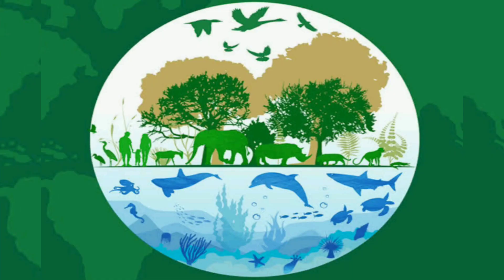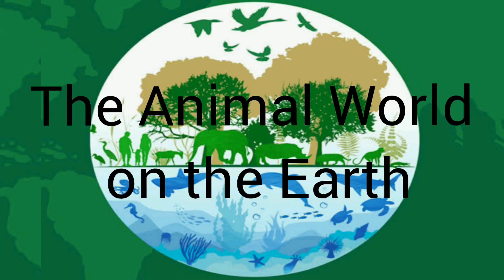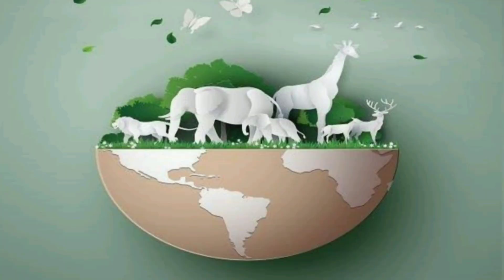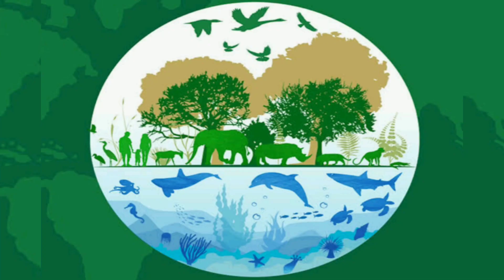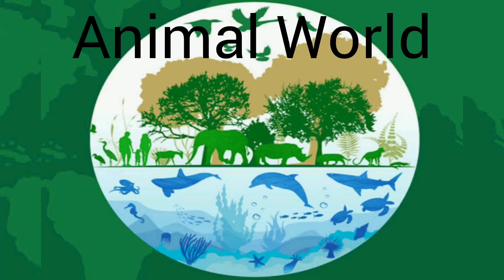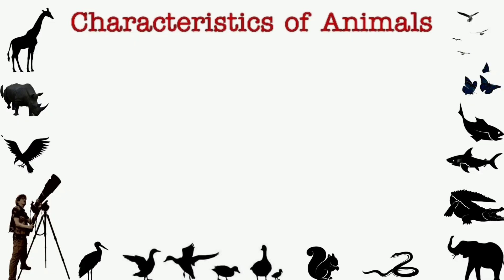The animal world on the Earth. The living world on the Earth consists of plants and animals. In this lesson, we are going to see about the animal world. Let's see some of the main characteristics of animals.